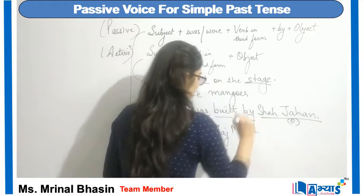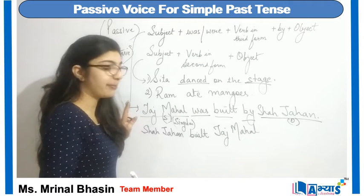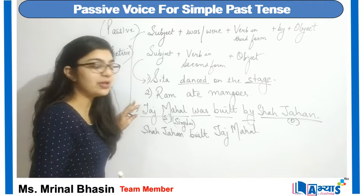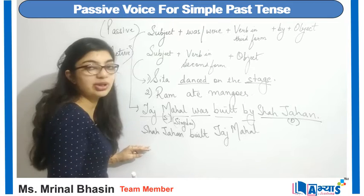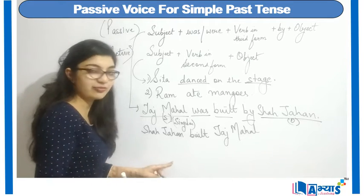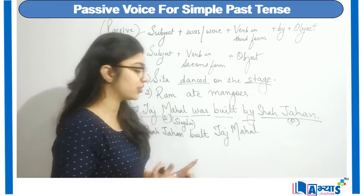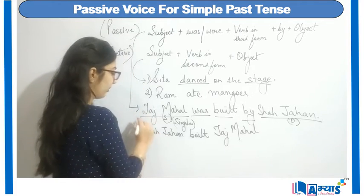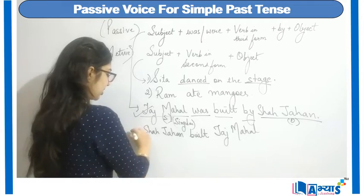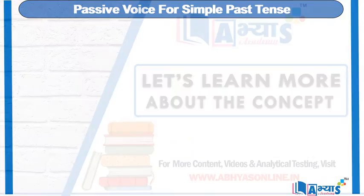The sentence which was in passive form in simple past tense is now converted to active form, but the tense does not change. This is still an example of simple past tense.